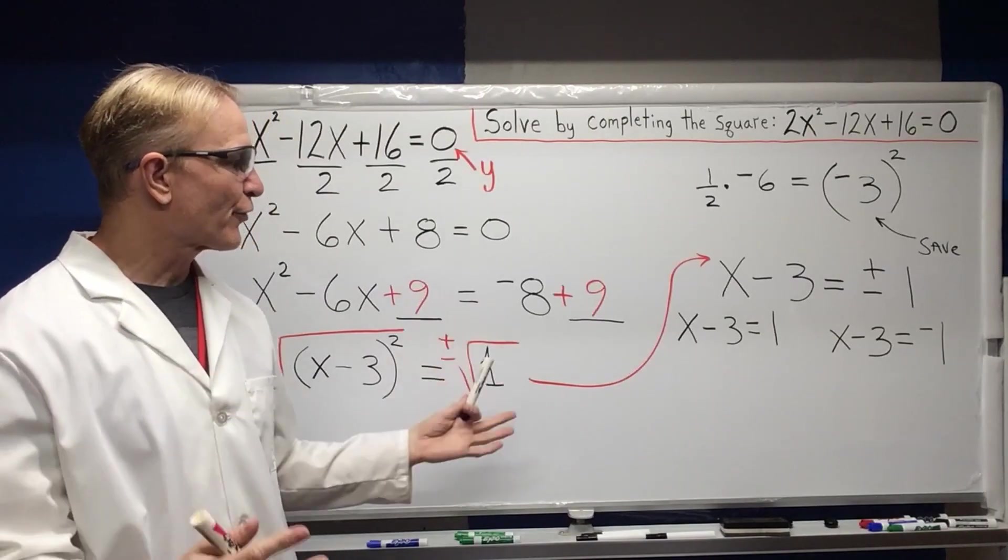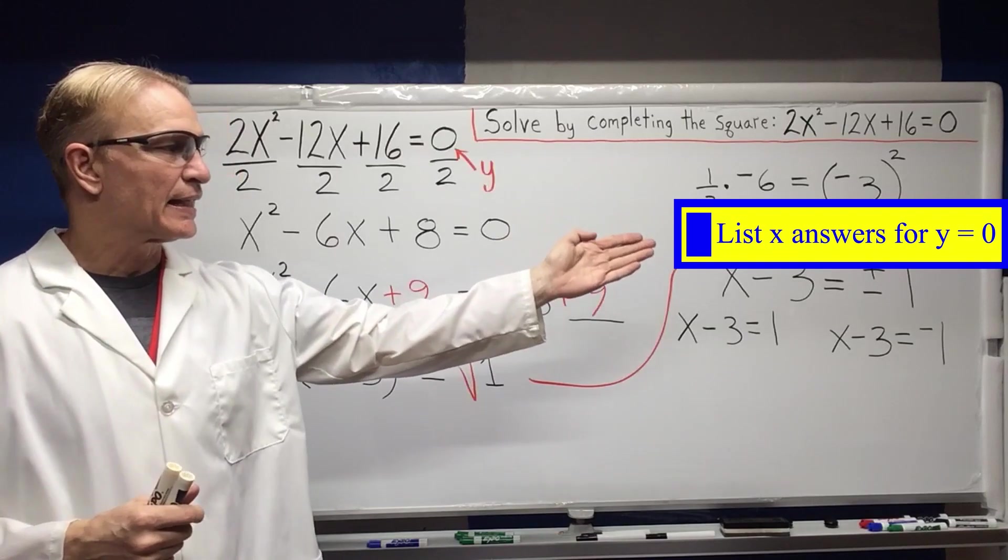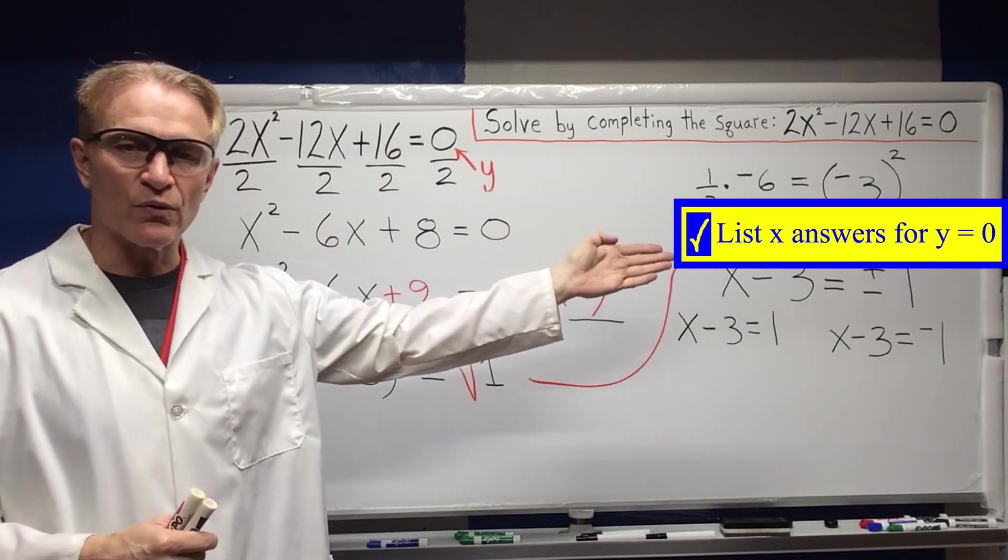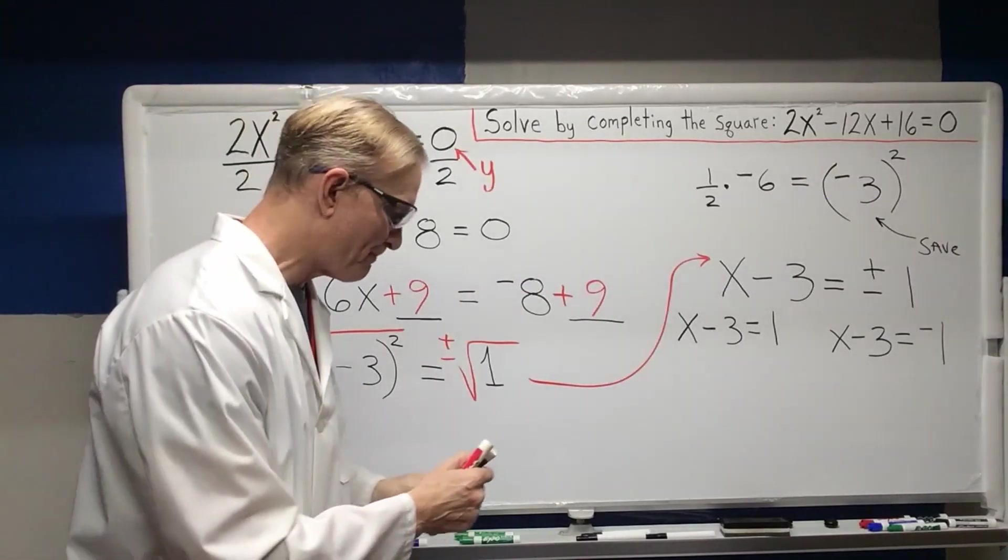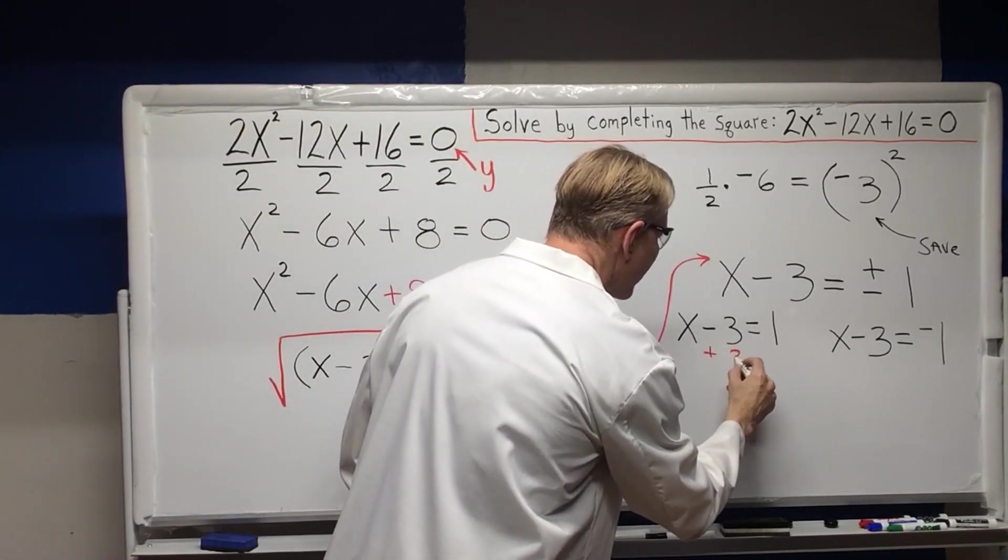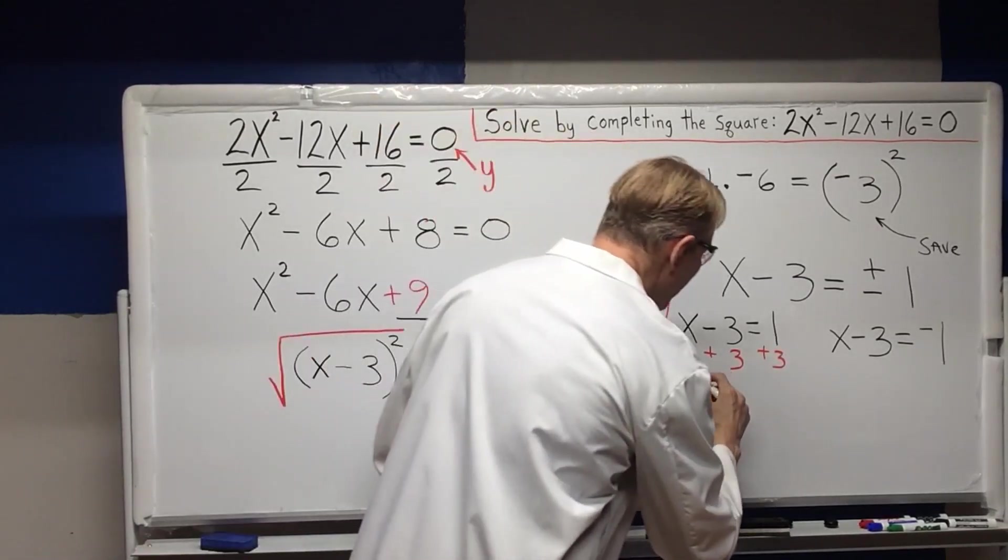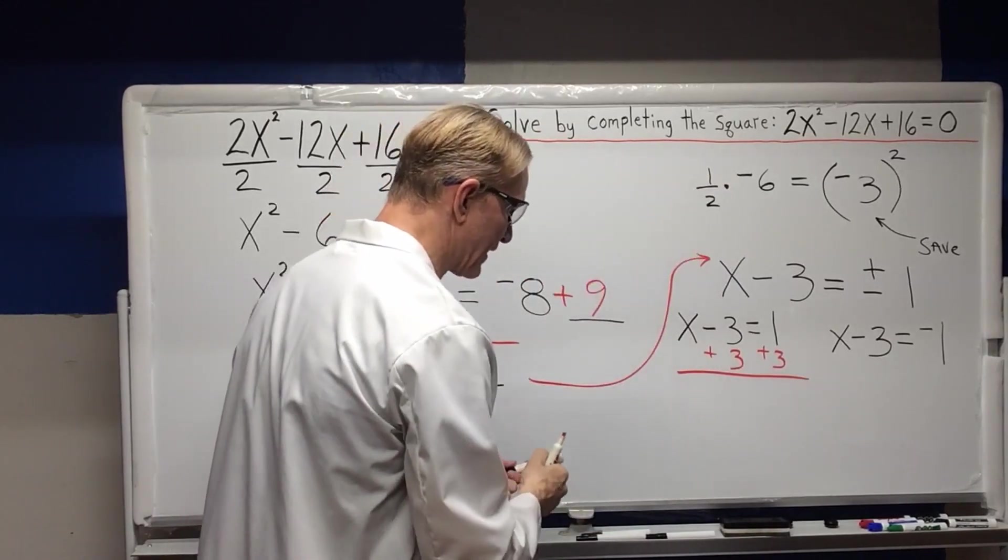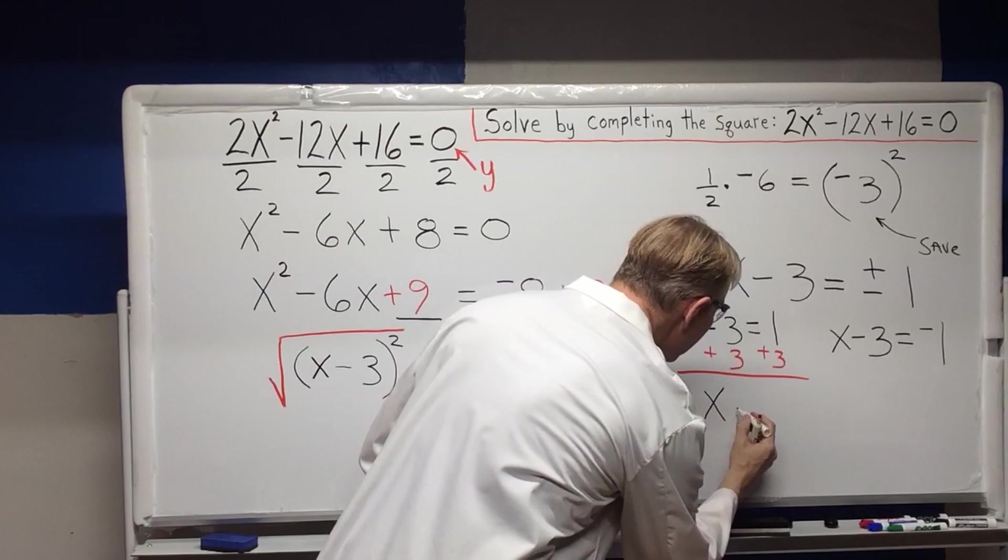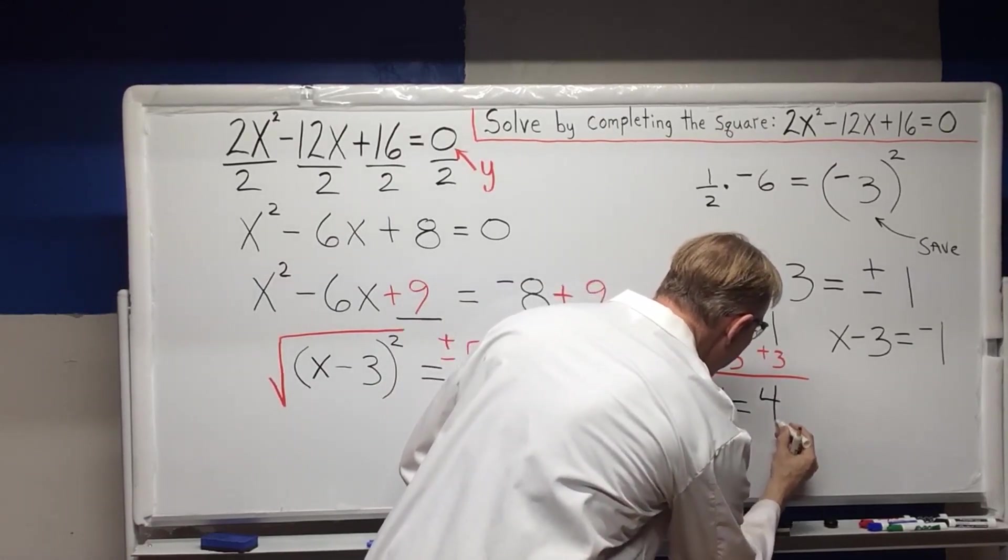So we're going to add 3 to both sides because the last step of this is list X answers for your Y equals zero. So add 3 to both sides, add 3, add 3 for this one, and we're going to get X equals 4.